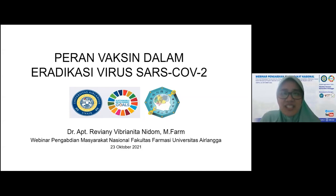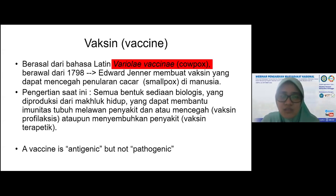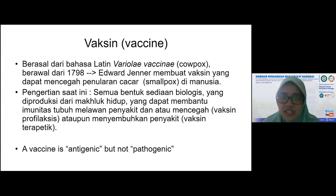Pagi ini saya ingin share tentang peran vaksin dalam eradikasi virus SARS-CoV-2. Untuk lebih tahu mengenai vaksin, apa itu vaksin? Vaksin awalnya berasal dari variola vaksinnya, yaitu di mana pada tahun 1798 muncul wabah cacar air atau smallpox atau cowpox. Kemudian ada seorang dokter bernama Edward Jenner yang membuat vaksin dari sapi. Cowpox disuntikkan ke sapi, antibody yang dihasilkan diambil, lalu dimasukkan ke tubuh manusia, dan itu sembuh. Dari situ vaksin bermula.